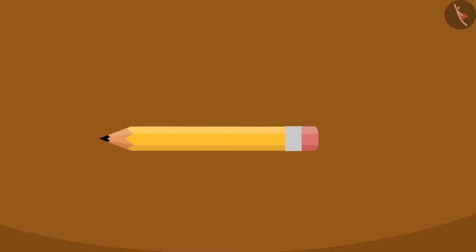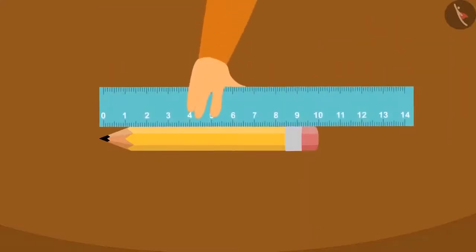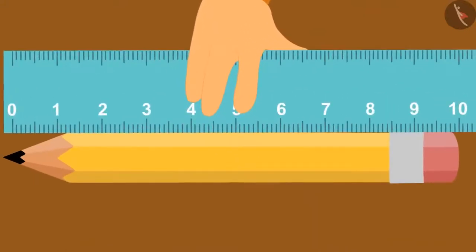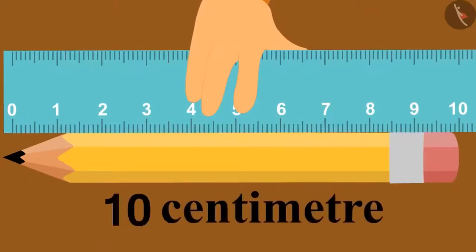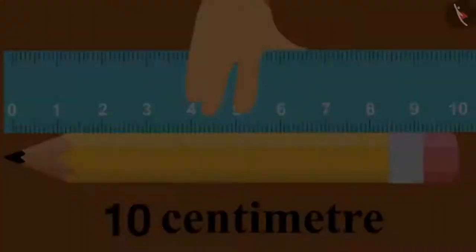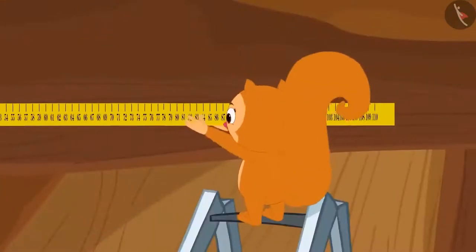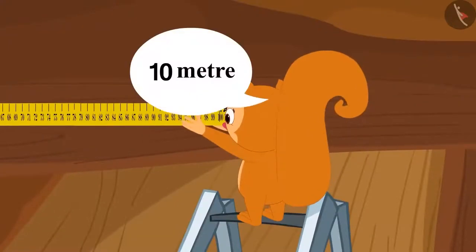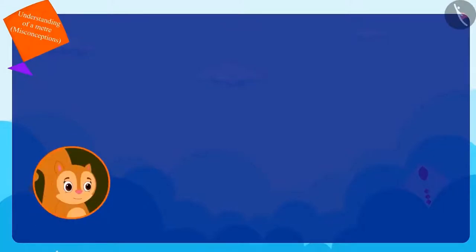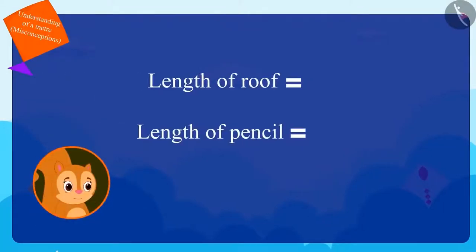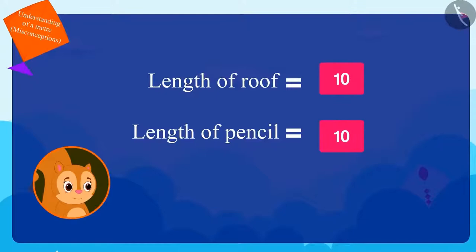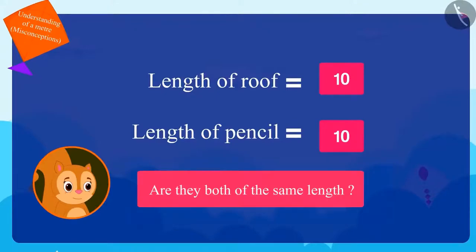After returning home, Chanda measured her pencil with a ruler and found that the pencil is ten centimeters in length. Then she measured the length of her roof with her measuring tape and found that the roof was ten meters long. Chanda started thinking that the length of both her roof and pencil is ten. So, are they both of the same length?